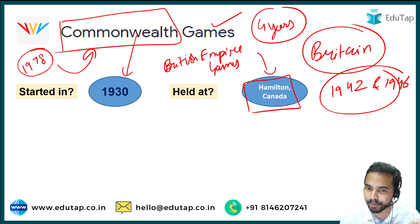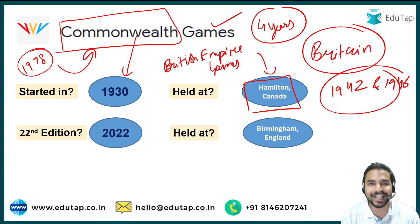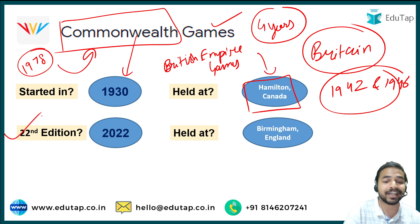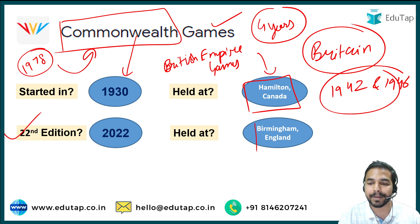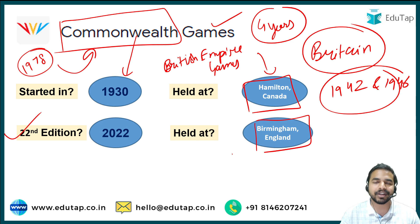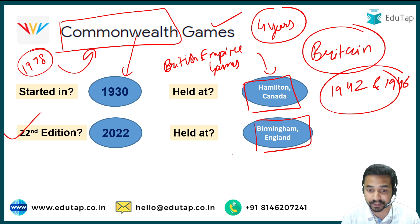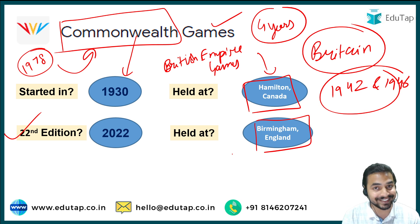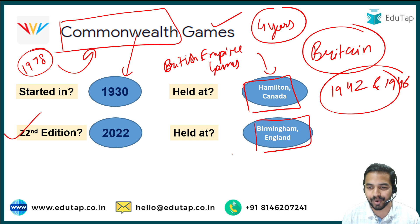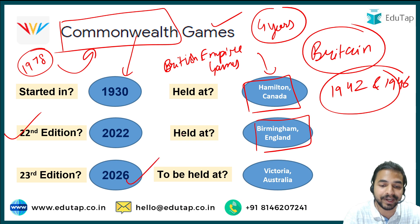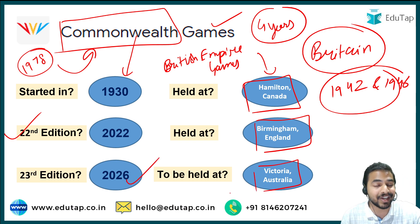Whenever such major events take place, you are always required to remember when the first edition was held, what the present edition was — that is the 22nd edition, which happened this year — and where the next edition will be held. The next edition is going to be held in 2026 in Victoria, Australia. These are important points to remember about the Commonwealth Games.